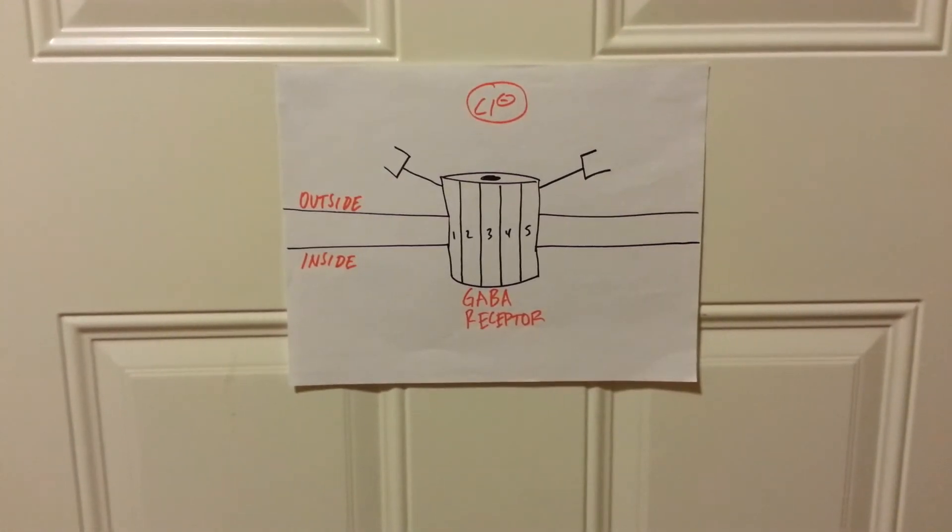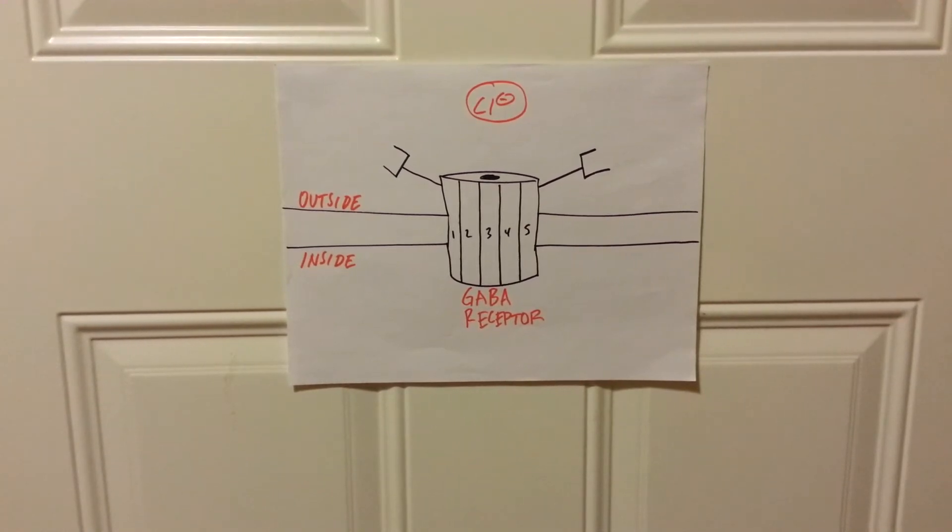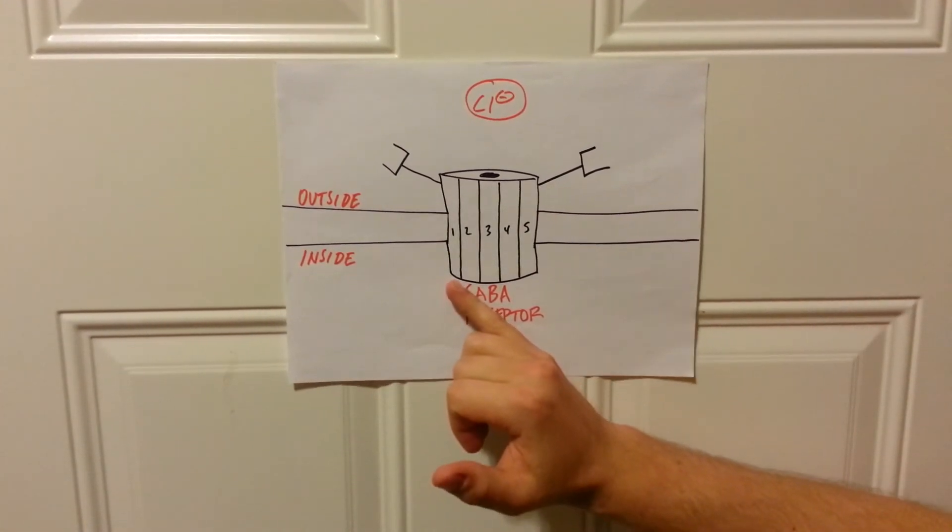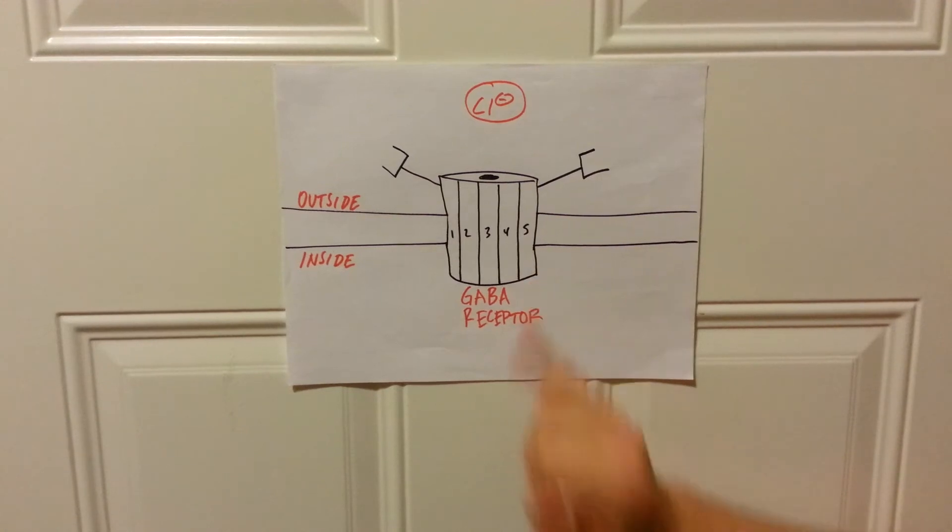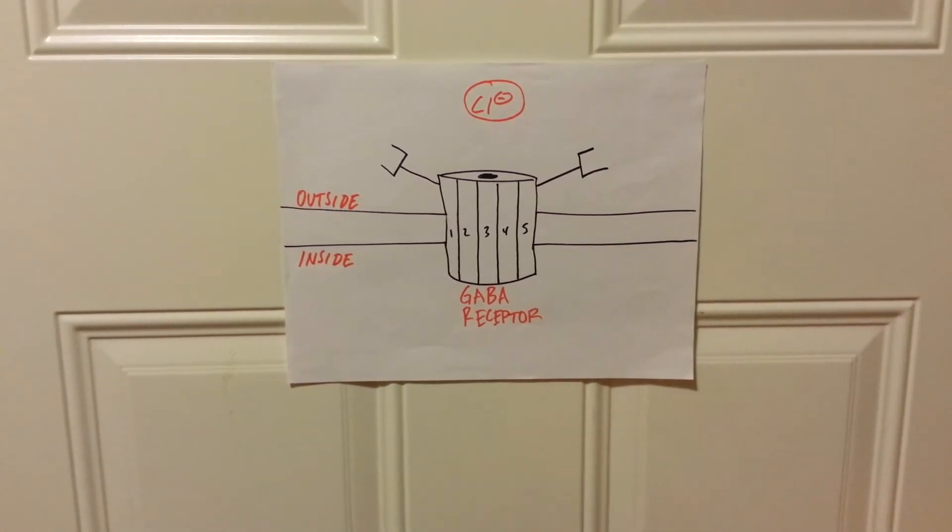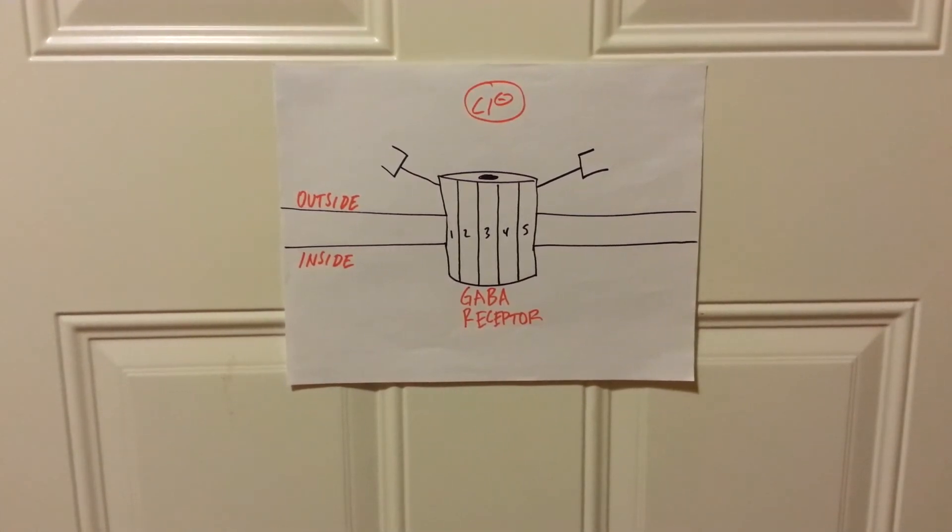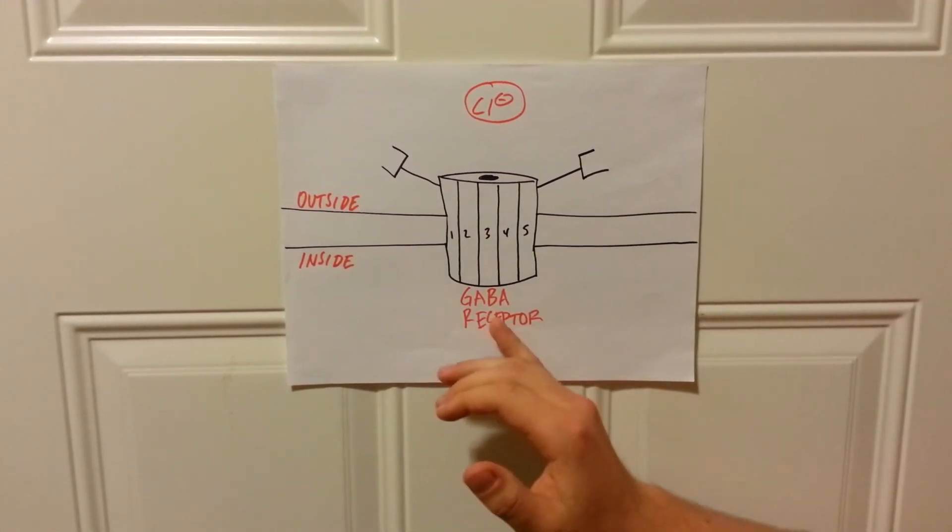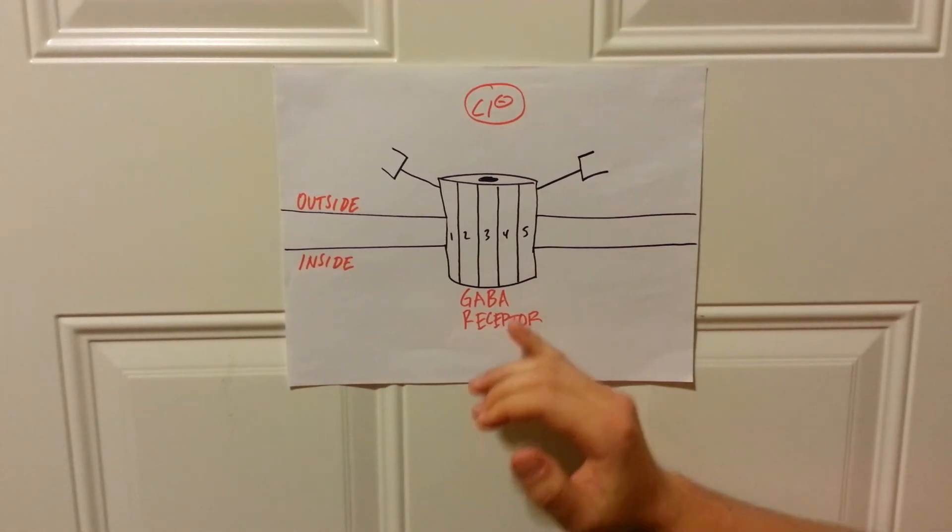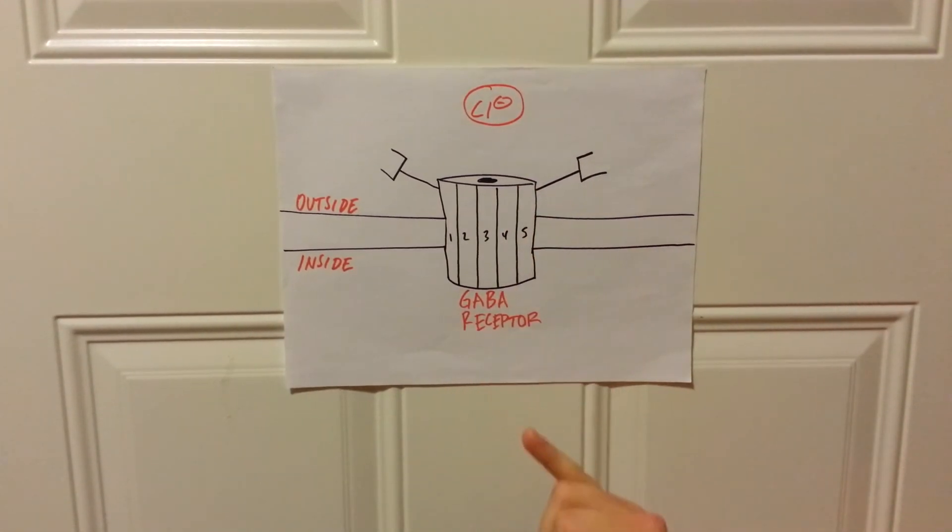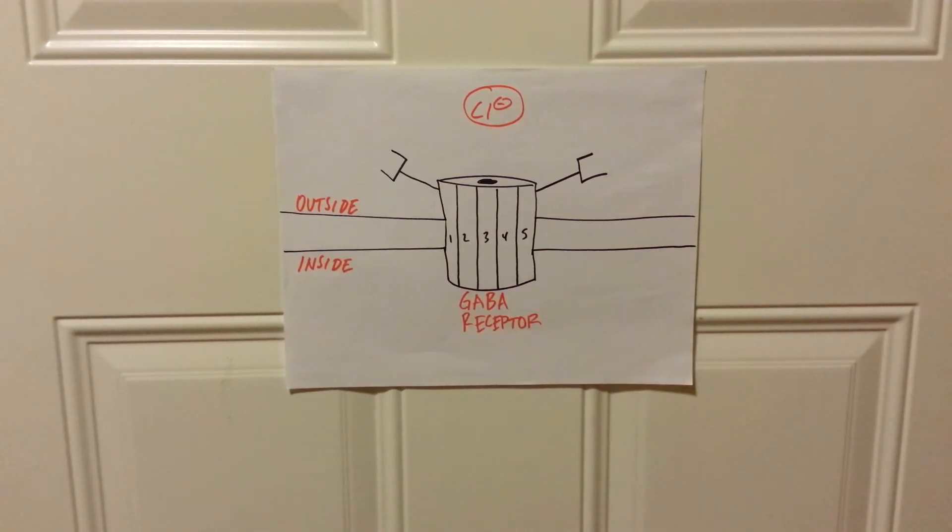The way that Xanax works is through the GABA receptor complex, seen here in a plasma cell membrane. Now GABA, as you probably know, is the most potent inhibitory neurotransmitter in our nervous system, and it works through a GABA receptor, which is essentially a chloride ion transport channel located in your cell membranes.